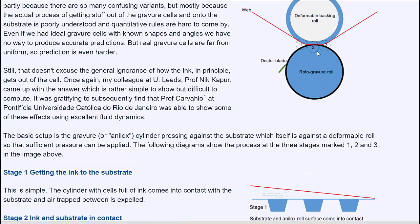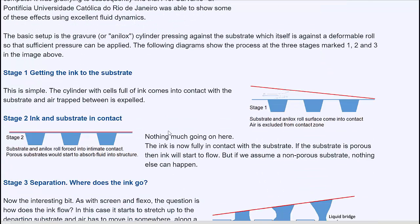In the middle, so in this second part, nothing whatsoever happens. We just have the ink cells in contact with the substrate. Now obviously if the substrate is absorbing, if it's paper, then the ink will start coming out. I'm concerned here only with non-absorbing substrates.